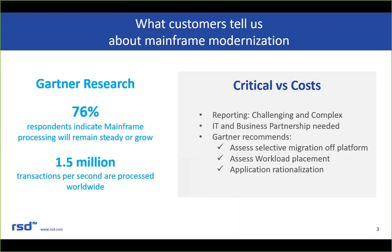As Gartner reports, the IT and business partnership is in a critical state and needs attention. Gartner recommends specific actions for modernization initiatives surrounding the mainframe. One is to assess applications for selective migration off-platform — for instance, applications not critical to the business or with no specific ZOS requirements. Another is to assess workload placement to gain efficiencies and optimization. You can use Z-TRIM to analyze the current state and identify opportunities for efficient workload placement across your infrastructure.